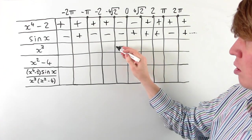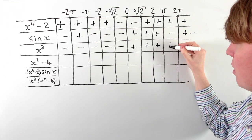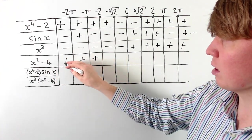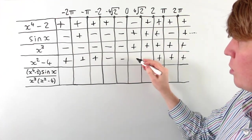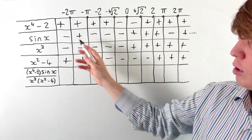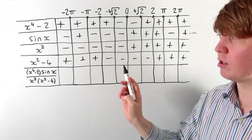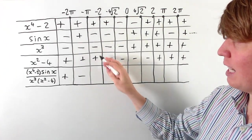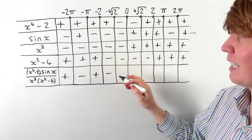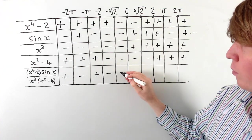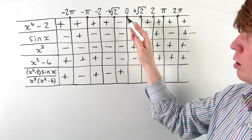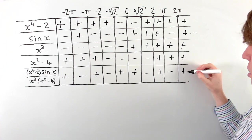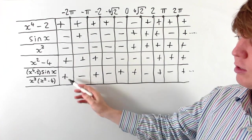For x cubed: it's negative whenever x is less than zero and positive whenever x is greater than zero. For x squared minus four: it's positive when x is less than negative two and also when x is greater than two, and negative in between. Now combining all the signs: two positives and two negatives give a positive overall; one negative gives a negative; crossing zero where two signs change simultaneously keeps the sign positive. The pattern continues alternating positive and negative every pi units to both the left and right.